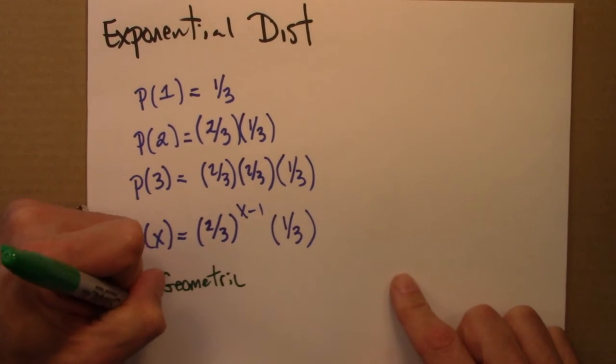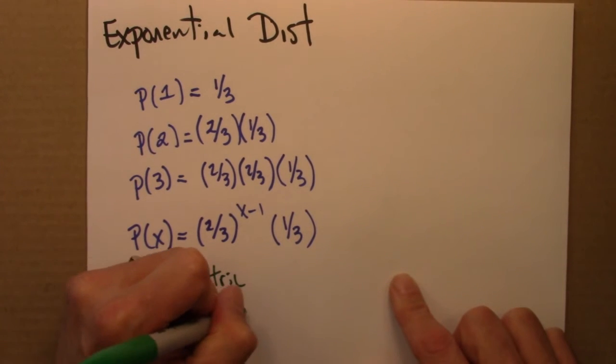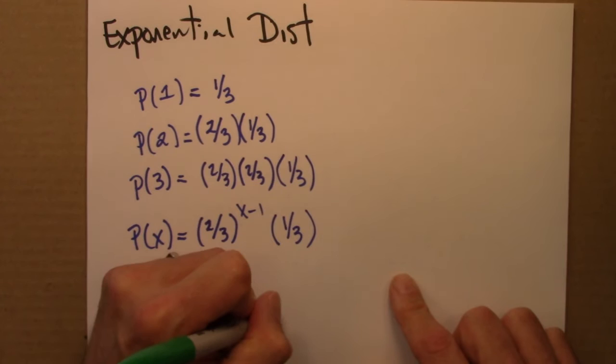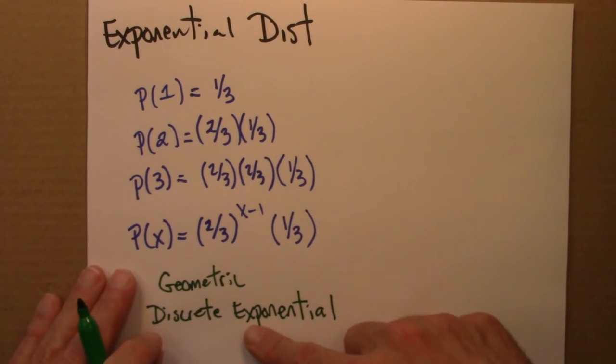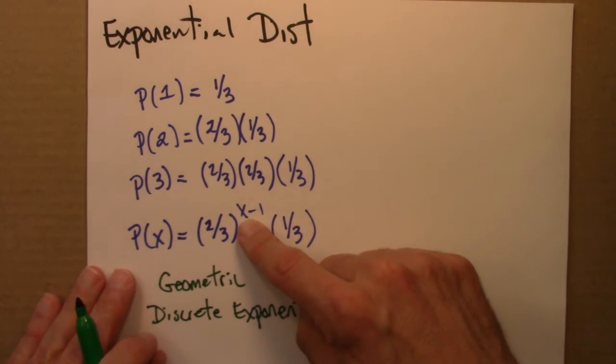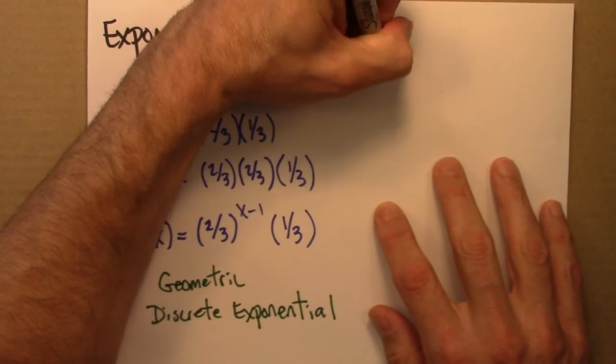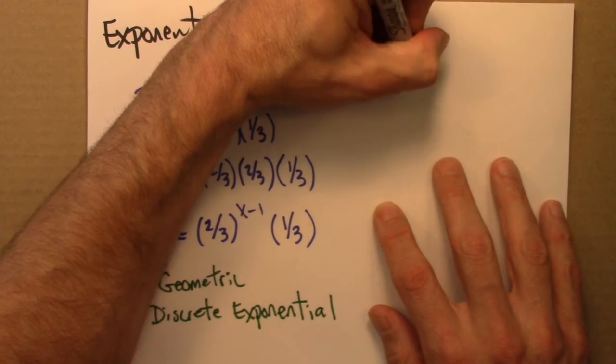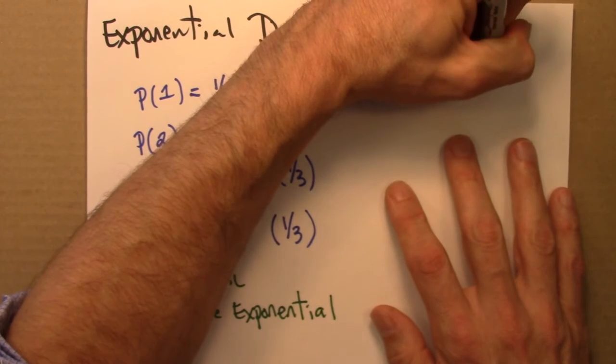Or sometimes a discrete exponential. And it's this exponential behavior that's important. So this is exponential because now the variable is in the exponent. So just a reminder, exponential would be something like this.